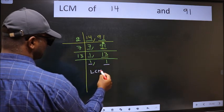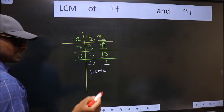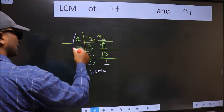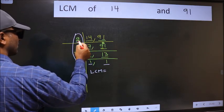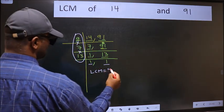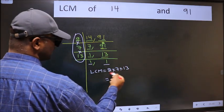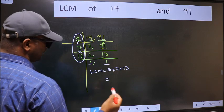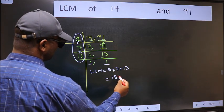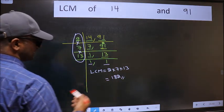So our LCM is the product of these numbers: 2 into 7 into 13. When we multiply these numbers, we get 182. Our LCM is 182.